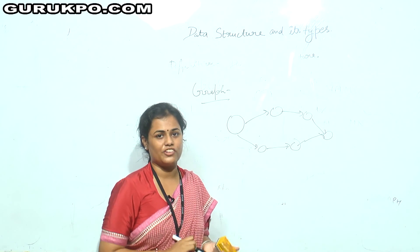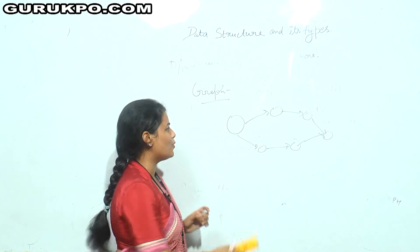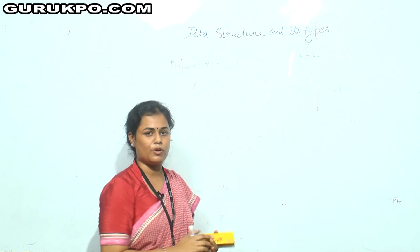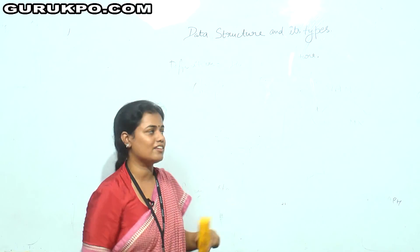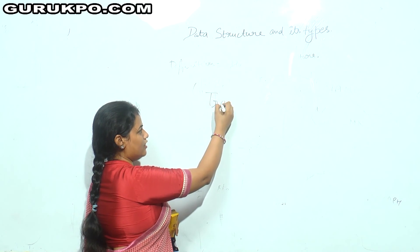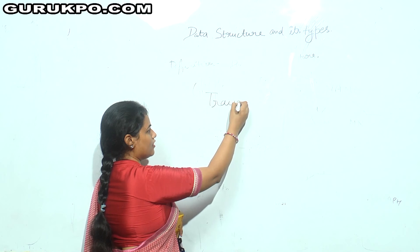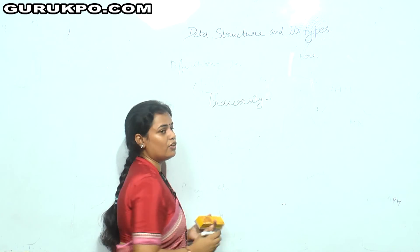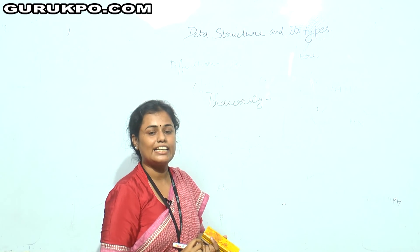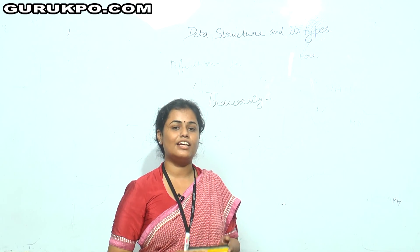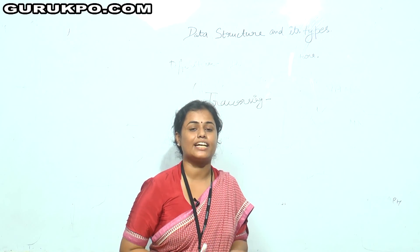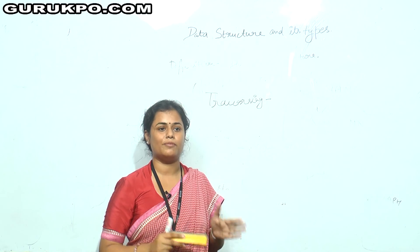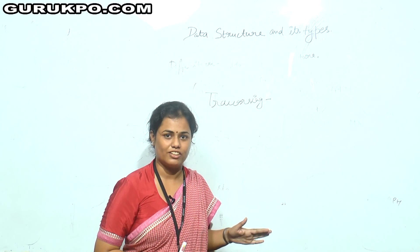Now, what are the operations we perform on data structures? The basic operations are: traversing — in traversing, each node is read exactly once. If you visit each node exactly once, that is called traversing.